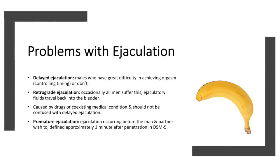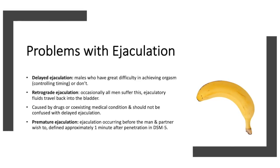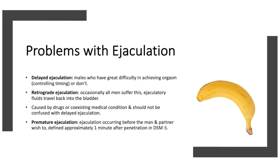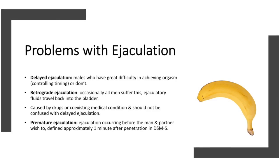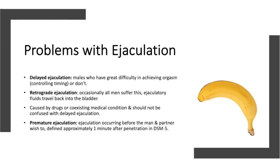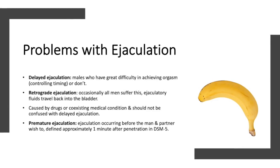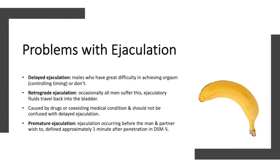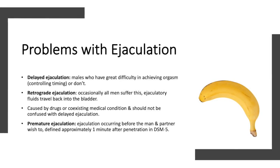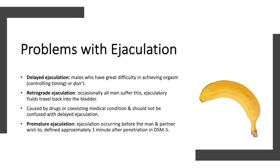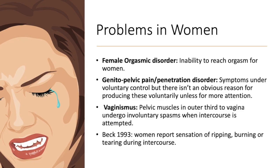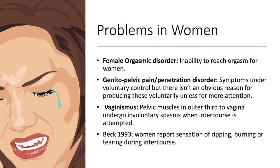Retrograde ejaculation is caused by drugs or coexisting medical conditions and should not be confused with delayed ejaculation. Premature ejaculation is when ejaculation occurs before the man and partner wish, defined as approximately one minute after penetration in the DSM-5. Female orgasmic disorder is when women are unable to reach orgasm.